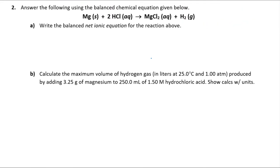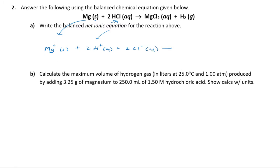This next one is a limiting reagent problem, but first we need to balance the net ionic equation. Magnesium is a solid — it does not dissociate, so we write it as given. Don't be tempted to write Mg²⁺; it's not a salt, it's a chunk of magnesium, like the ribbon you dealt with in lab. A solid neutral piece of metal has a zero oxidation state. HCl is a strong acid, so it completely dissociates, giving two H⁺ aqueous and two Cl⁻ aqueous.